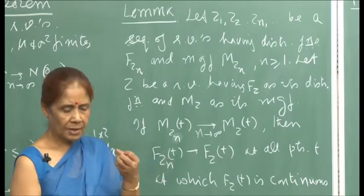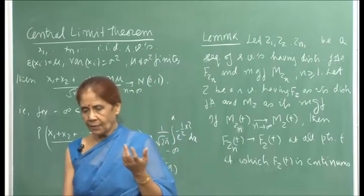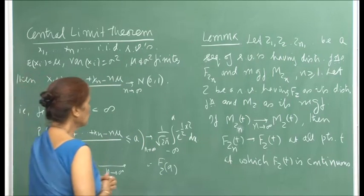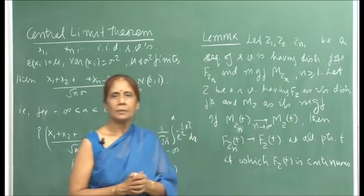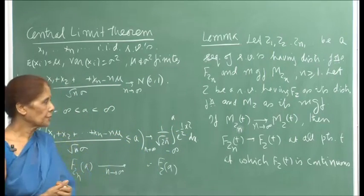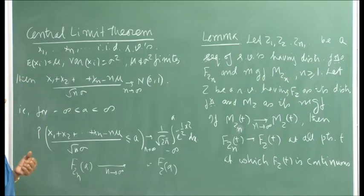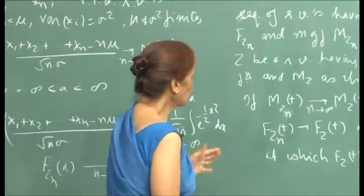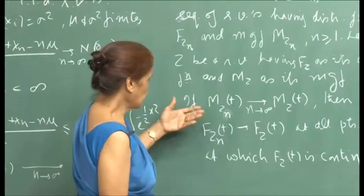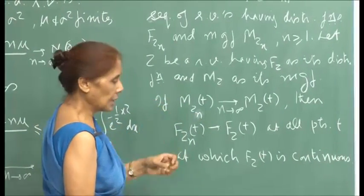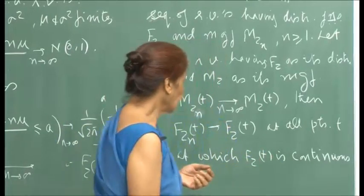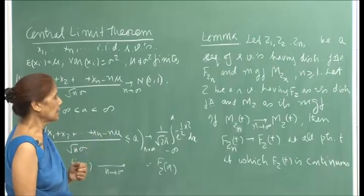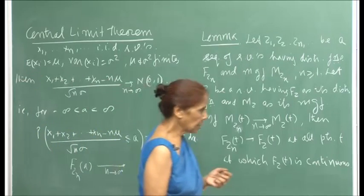This is the idea: MGFs uniquely determine the distribution. The MGF uniquely gives you the density function or the distribution function, because once you get an MGF, you can uniquely fix the distribution from the form of the MGF function. This is what we are stating here and have been using otherwise.